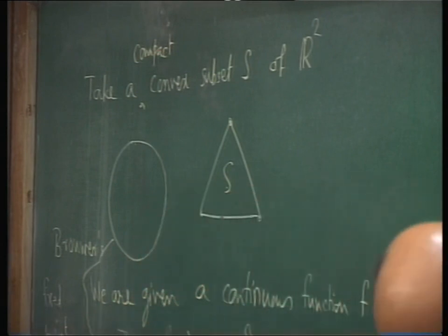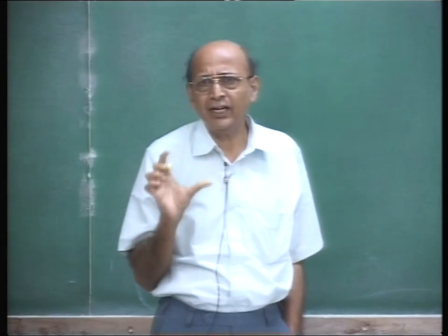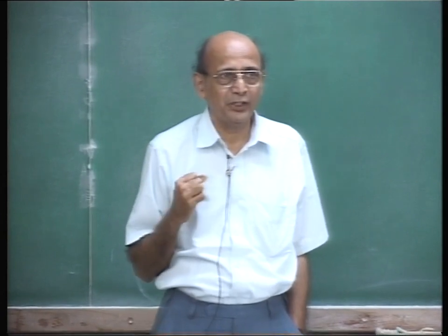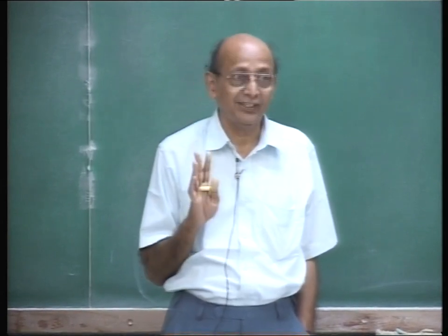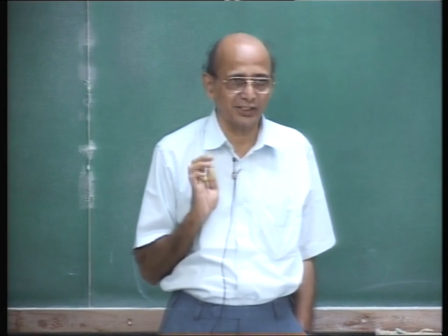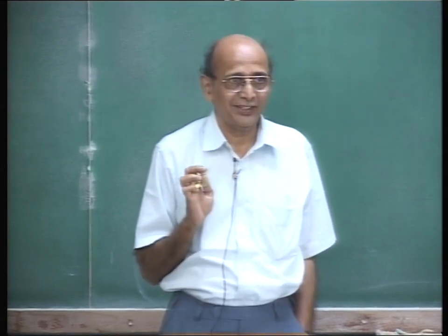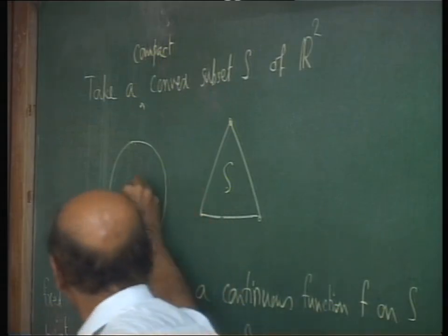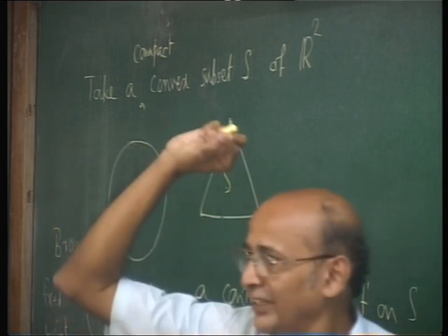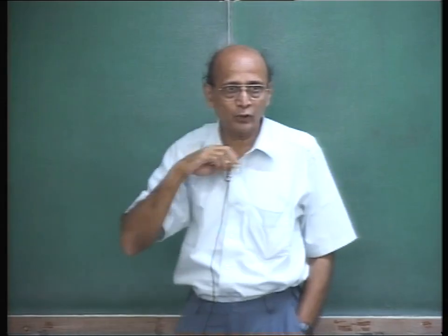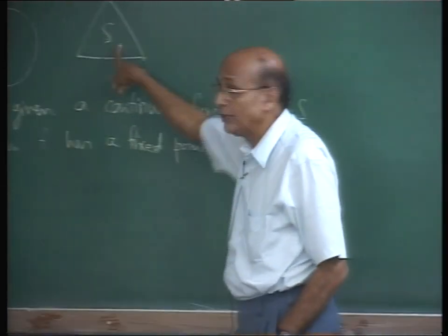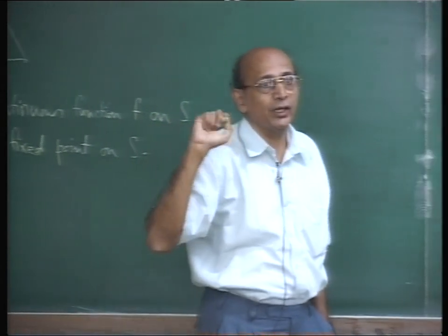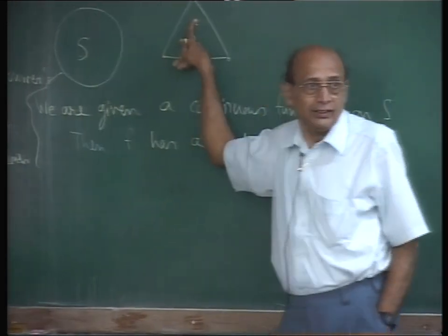Up to homeomorphism, a triangular disk and a circular disk — a unit disk — are actually homeomorphic to each other. Strange, but it's true. Therefore, showing that this has a fixed point is equivalent to showing that that has a fixed point, because you can define a homeomorphism from this to that.